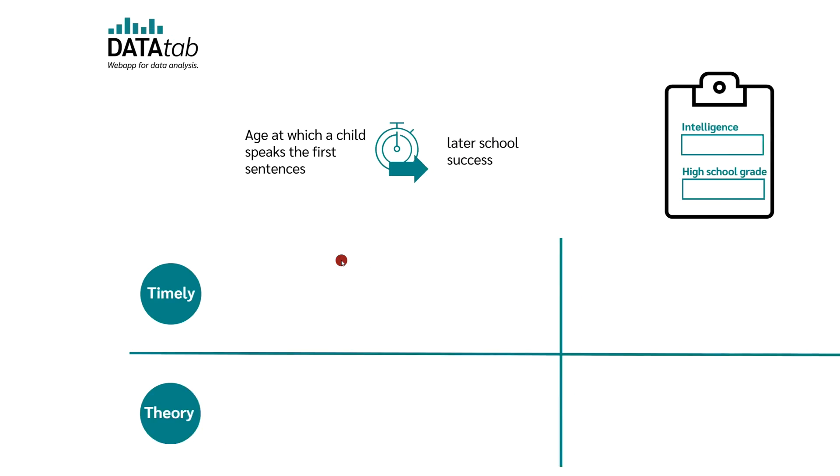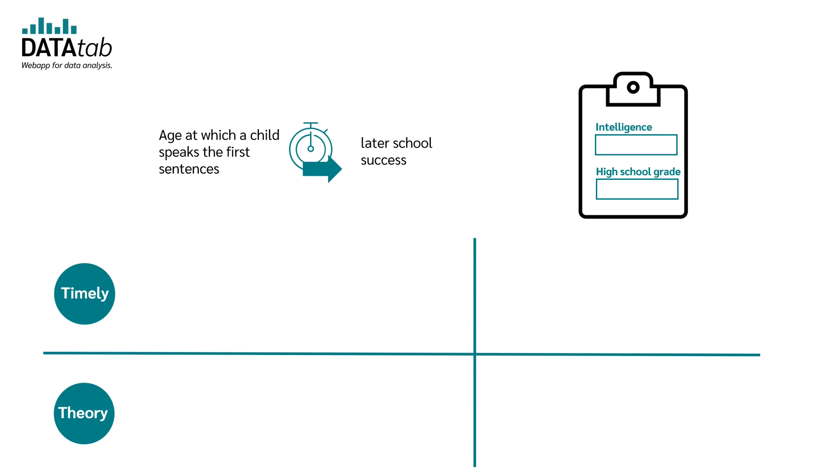Let's take a look at our examples again. In the first example where the question is whether the age at which a child speaks the first sentences influences later school success, there is clearly a temporal component. The measurement of when the first sentences were spoken is clearly before the measurement of later school success.